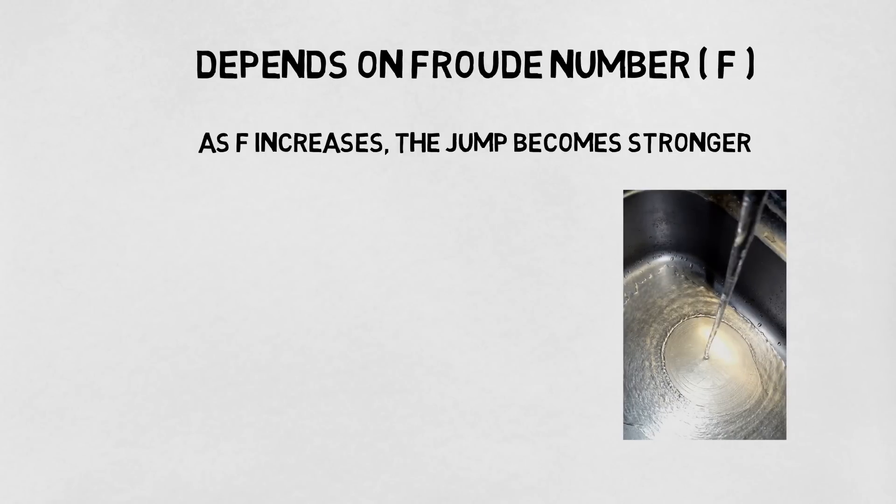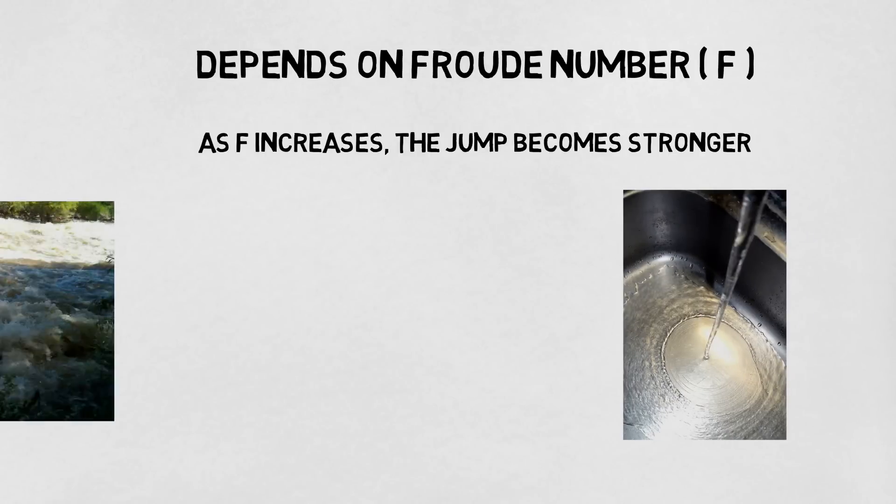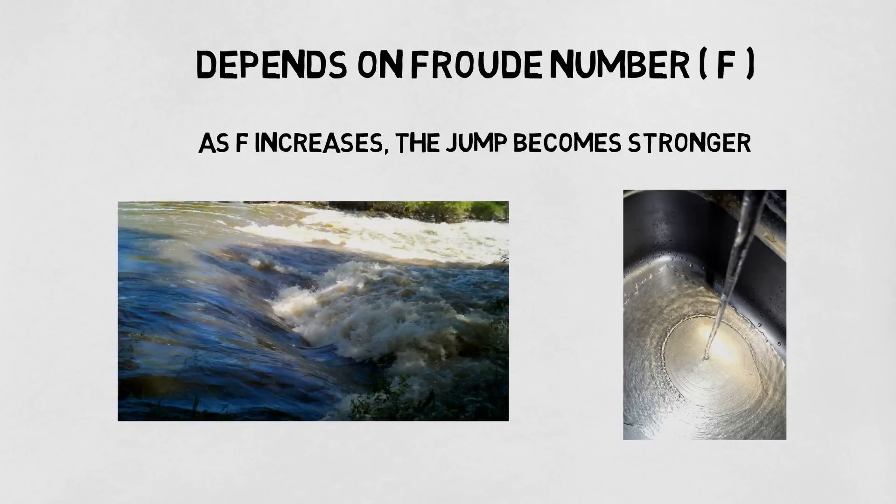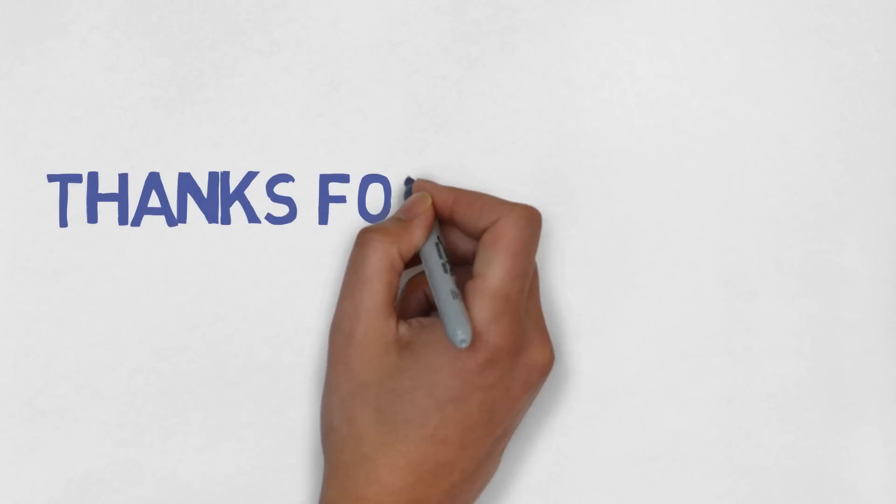The hydraulic jump that you find in your sink has a lesser Froude number, whereas a hydraulic jump that you are more likely to find in a stream like a river has a higher Froude number. Thanks for watching.